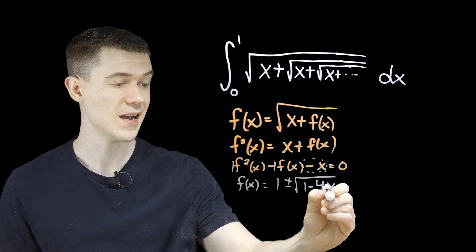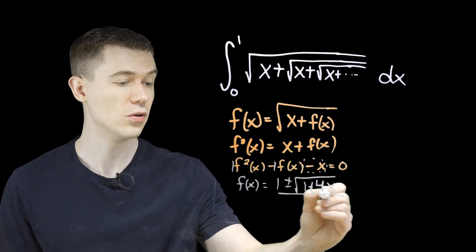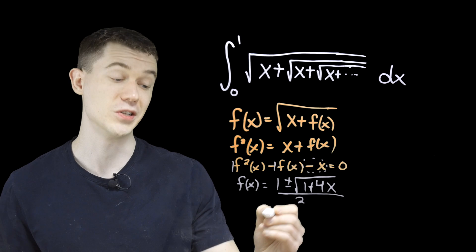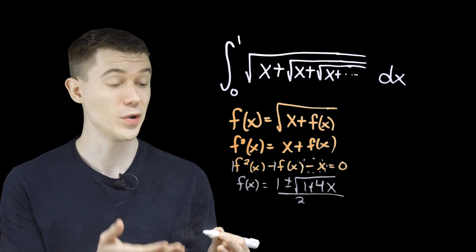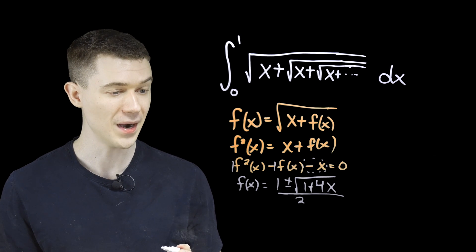So minus x, I'll say minus a minus is a plus, all over two a, which is one. So actually we have our function here, or we could say functions because it's a plus and a minus.